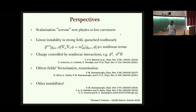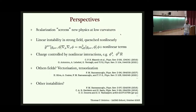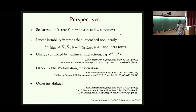People have tried to generalize scalarization to vectors, tensors, and spinors to see if they can have spontaneous generation of these fields. There's quite a bit of work on vectors, but it's significantly harder without introducing ghosts and ill-defined theories. People have also thought about replacing the tachyonic instability with a gradient or ghost-like instability at the linear level, quenched by nonlinear effects — an interesting direction of current investigation.